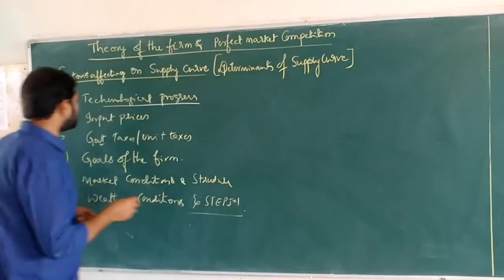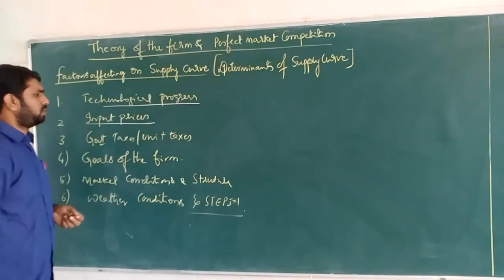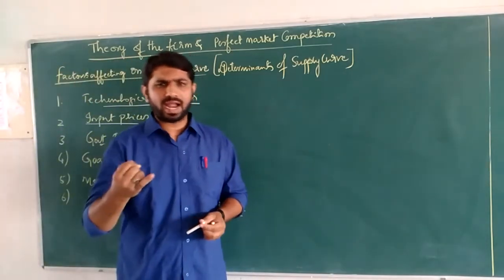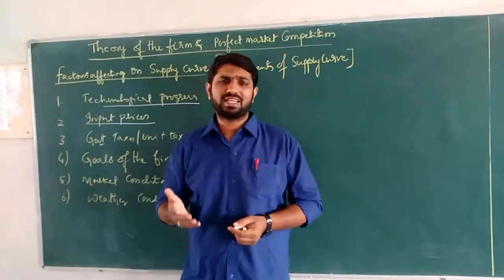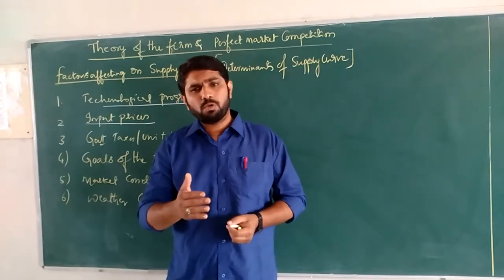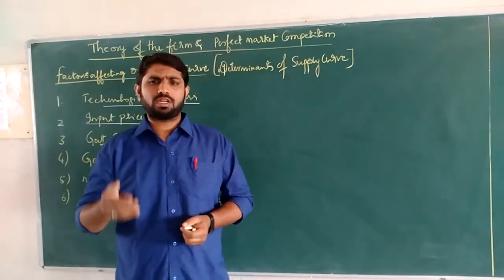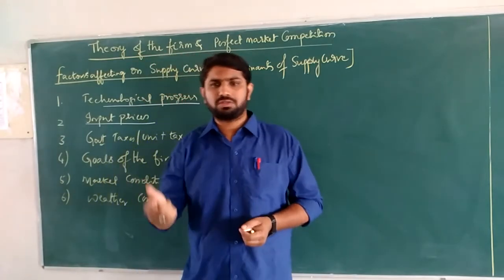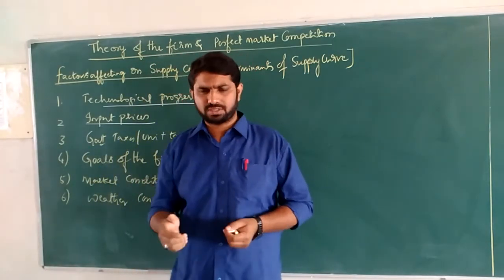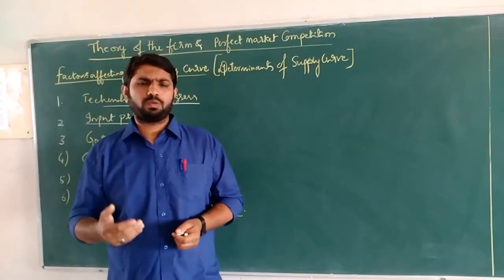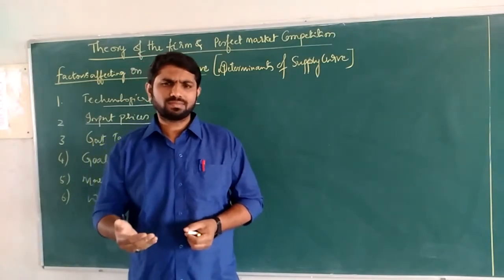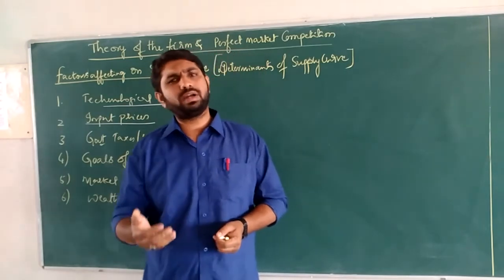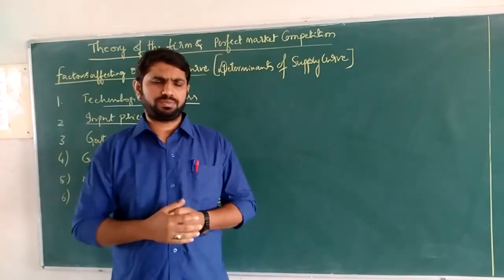The second factor is input prices. You all know the factors of production: land, labor, capital, and organization. The costs required to buy these factors are called input costs or input prices — like rent, wages, interest, and profit. These are the elements required to buy the factors of production.